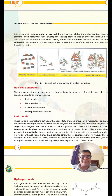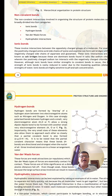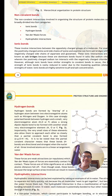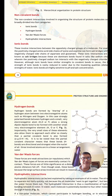Hydrogen bond always occurs between oxygen and hydrogen, hydrogen and oxygen, or oxygen and nitrogen. Generally in water, it has 3.4 hydrogen bonds. But if it is solid ice, then it has 4 hydrogen bonds. There is a difference in hydrogen bond formation. You know which atoms form hydrogen bonds.